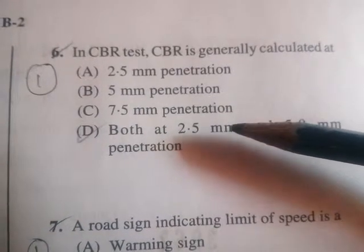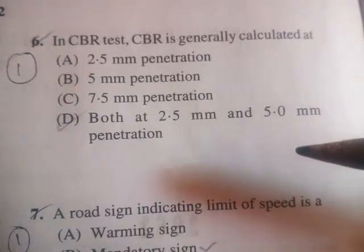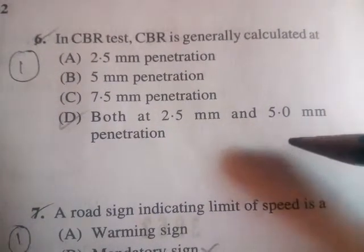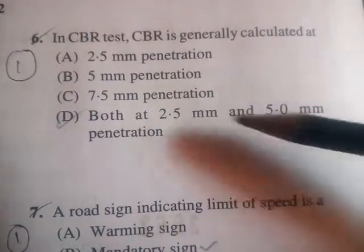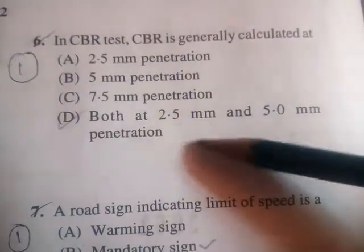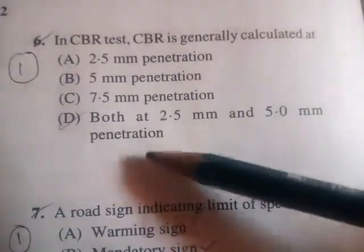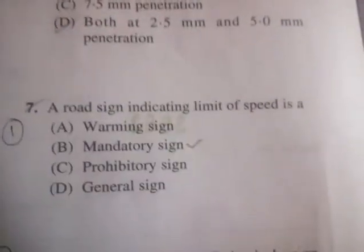Next question: in the CBR test, CBR is generally calculated at — 2.5 mm penetration, 5 mm penetration, 7.5 mm penetration, or both 2.5 mm and 5 mm penetration? The correct answer is D: both 2.5 mm and 5 mm penetration.